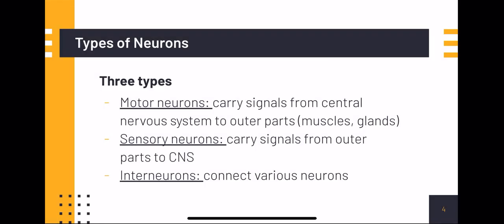There are three main types of neurons. Motor neurons carry signals from the central nervous system to outer parts of the body, such as muscles and glands — so basically motor neurons control our movement. Sensory neurons do the opposite: they carry signals from outer parts of the body to the central nervous system. And interneurons connect various neurons.